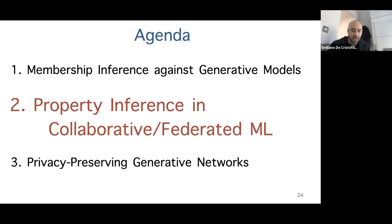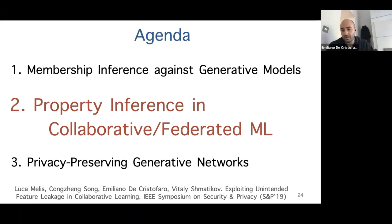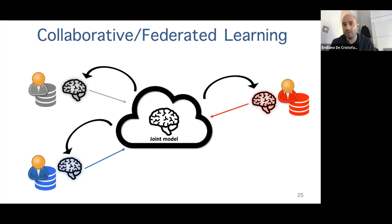The second result is property inference, studied in the context of federated learning. This was published at IEEE Security and Privacy with one of my former students who now works for Amazon and collaborators at Cornell Tech. Federated learning is an instance of collaborative learning — instead of a central cloud training the model, multiple participants collaborate to build a joint model that refines every participant's local model.